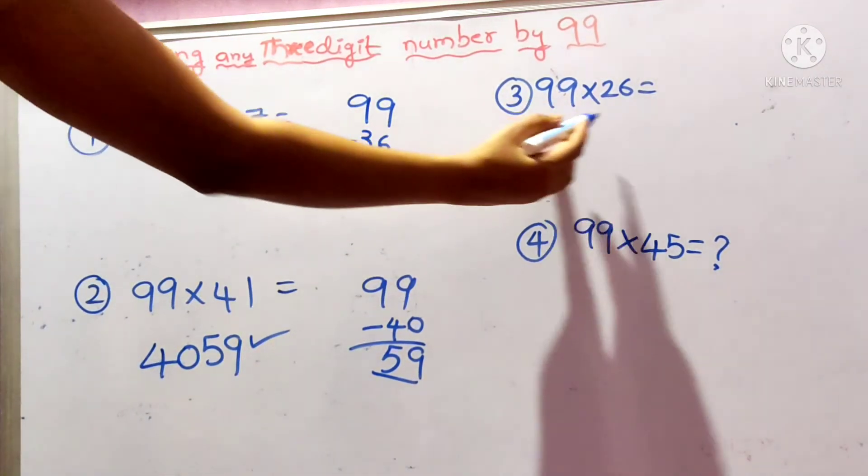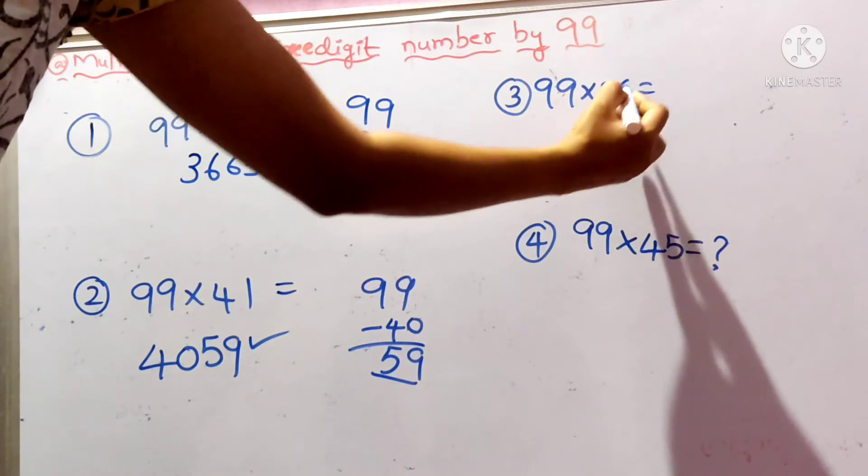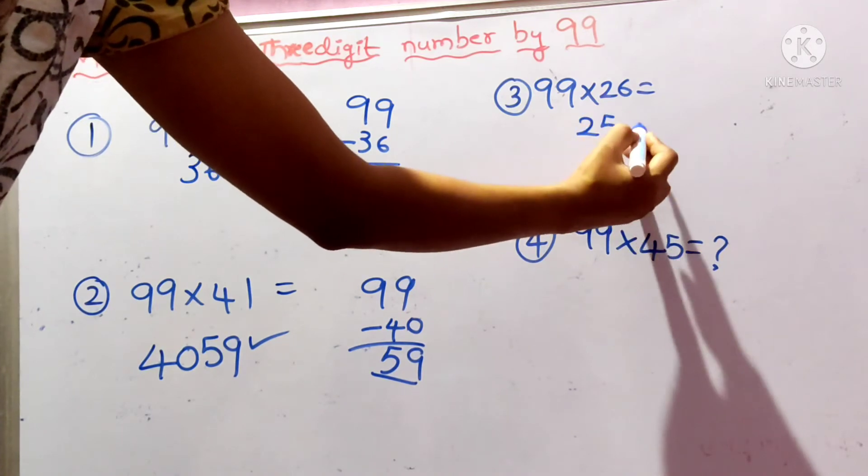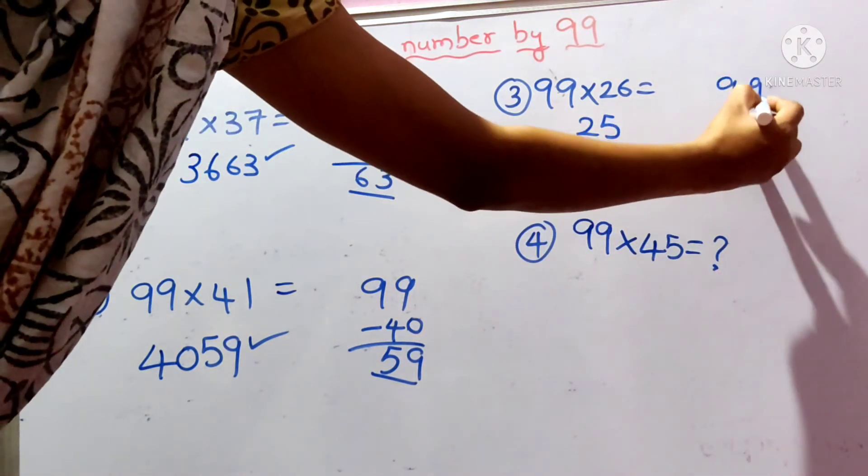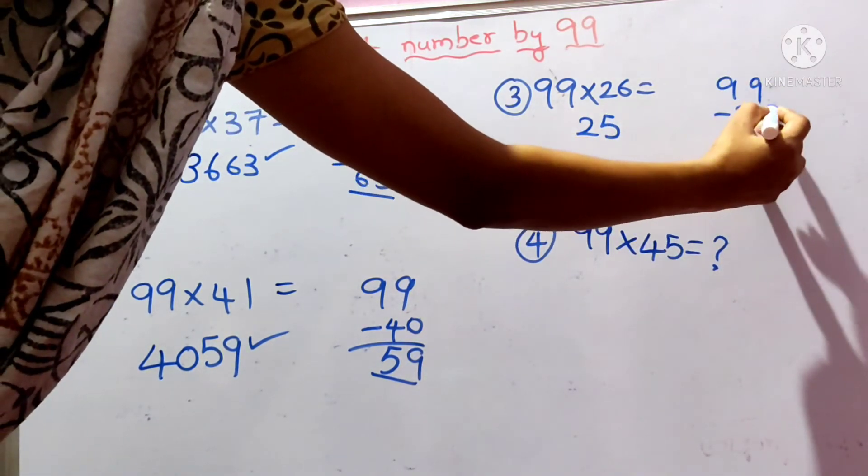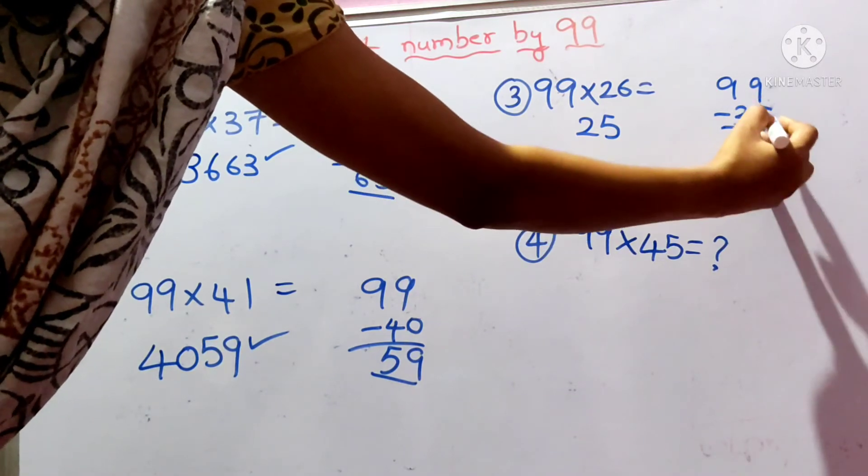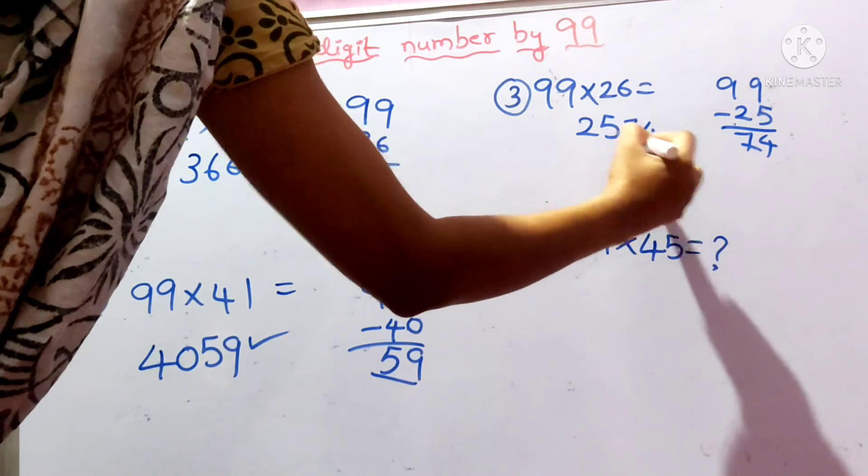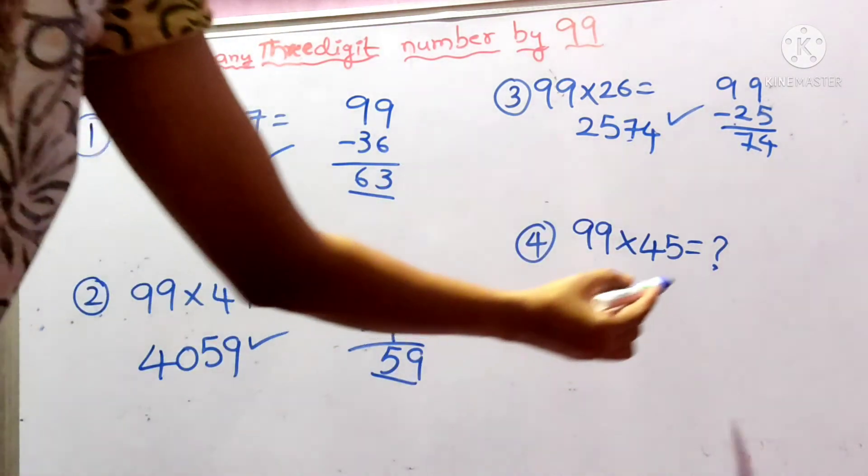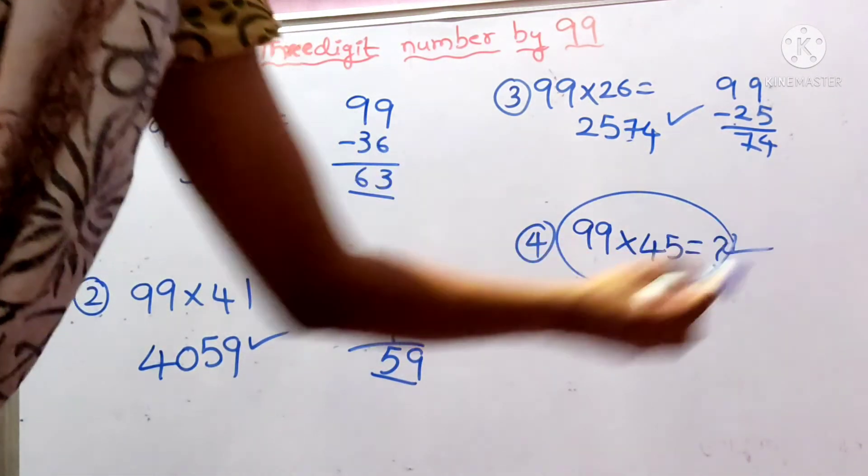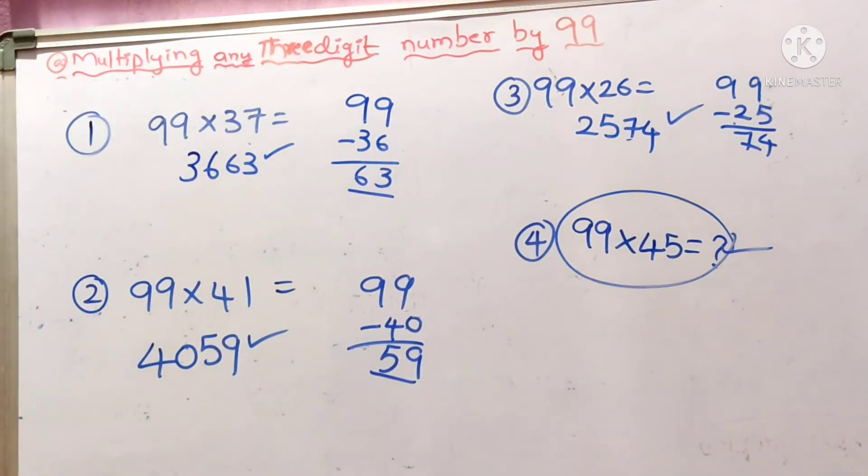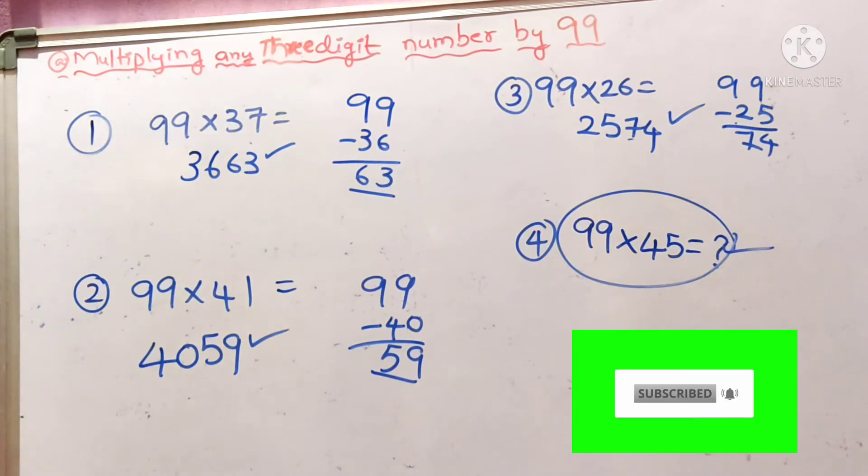Similarly, for 99×26. Less than 1 to 26 is 25. Now 99 minus 25: 9-5 is 4, 9-2 is 7. The answer is 2574. And this problem is left over for you. Please take a pen and paper, practice these questions. Then only you will get the answer.